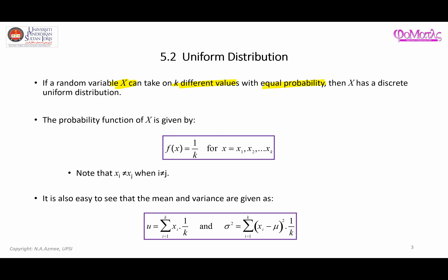The probability mass function of x is given by the formula in the box. You can see that the values for x are different — here we have x1, x2, and xk, up to k categories. Therefore the probability for each category to happen is going to be 1 over k.